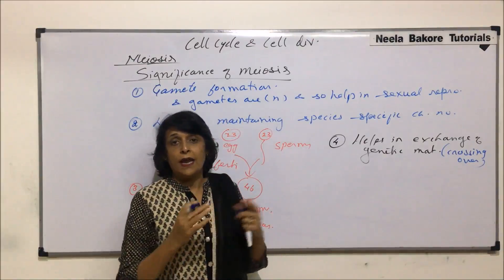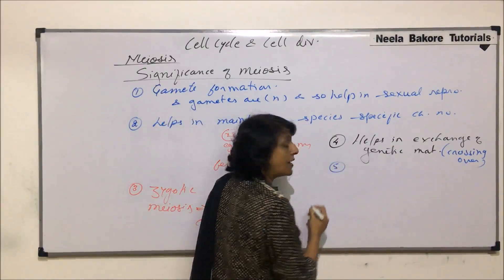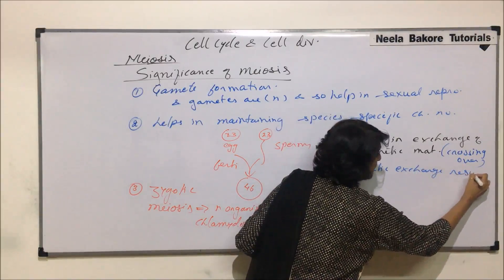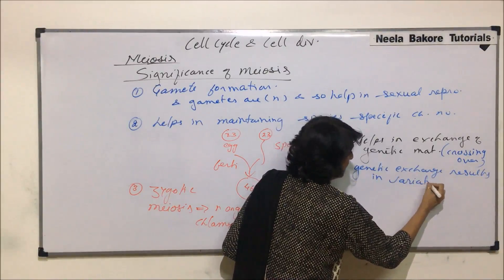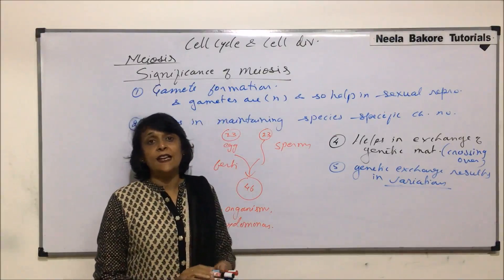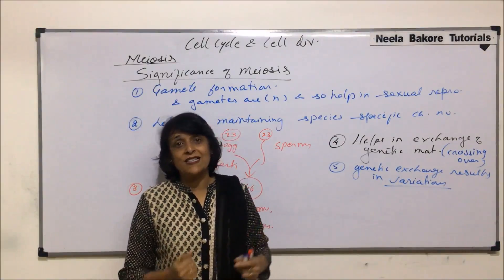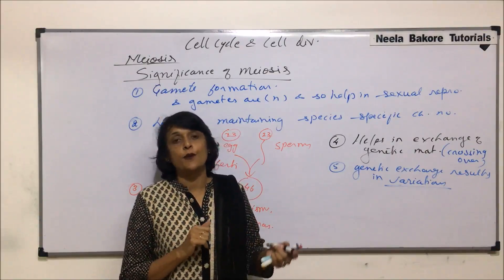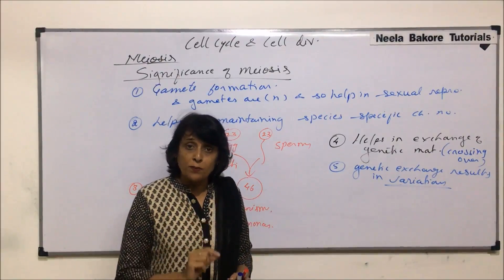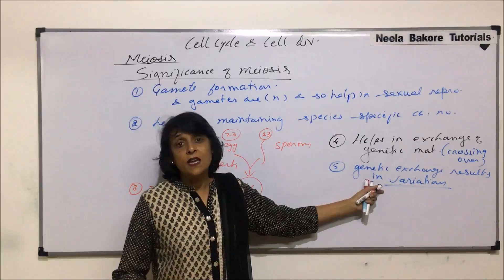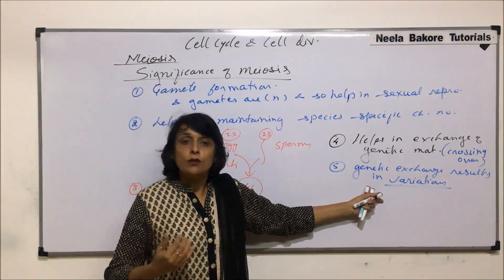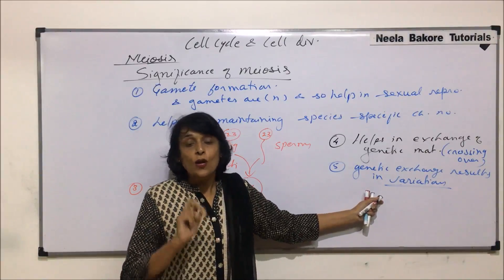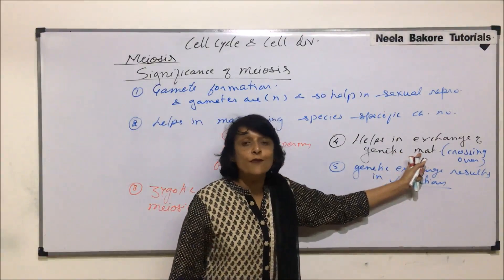How do these exchanges help? These exchanges result in variation — genetic exchange results in variations. In a population we see certain differences known as variations. For example, among human beings we see different heights, different eye colors, different hair textures. These are variations among the same population. The same thing is seen in a family: if there are two or three children, these siblings also differ from each other even though they come from the same parents, due to different exchanges of genetic material.